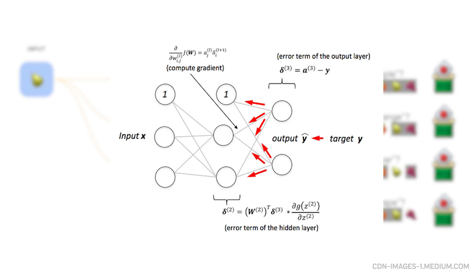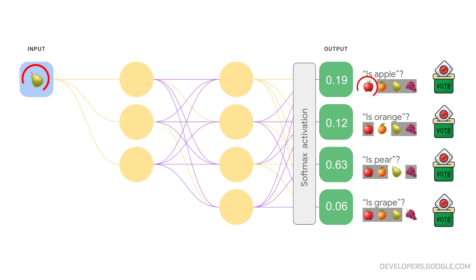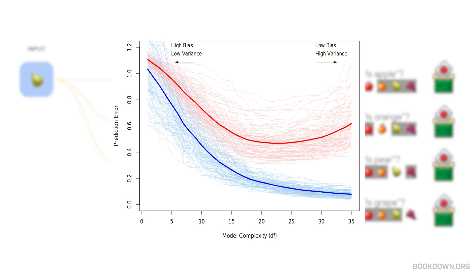The network learns through a process called backpropagation, essentially playing a massive game of warmer or colder. When it makes a prediction, it compares the result to the correct answer and adjusts its weights accordingly. Make a wrong guess – adjust the weights. Better guess. Keep those weights. This process repeats millions of times until the network becomes surprisingly accurate.